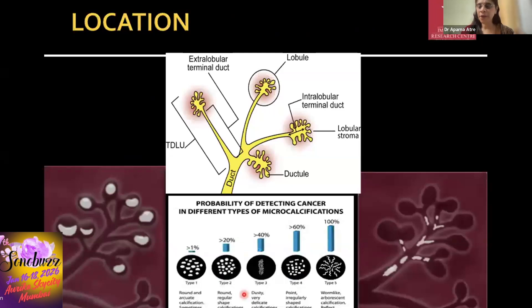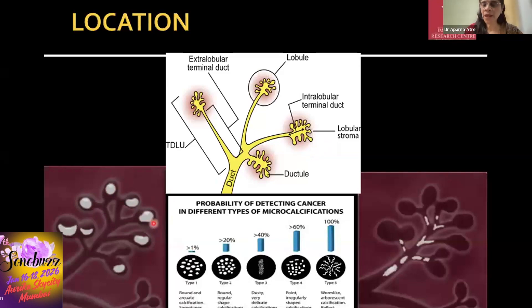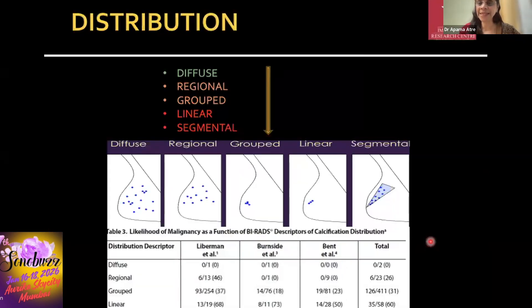Location refers to where the calcifications are situated within the TDLU. Sometimes it is easy, sometimes difficult, but if you can identify the location it simplifies interpretation. Acinar calcifications are round, punctate, look like peas in a pod, and can layer when not densely calcified. Ductal calcifications are rod-like and slightly irregular.